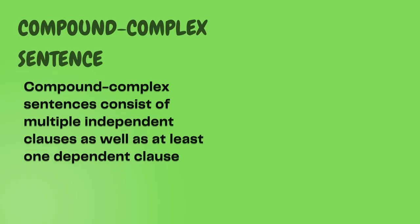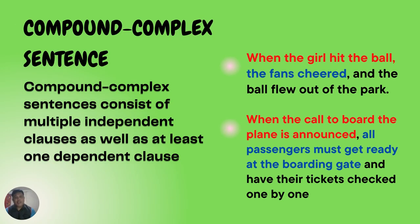Now we move to the last sentence type: the compound-complex sentence. A compound-complex sentence consists of at least two independent clauses and one or more dependent clauses. I've given different colors in the examples to help identify the kinds of clauses — one is an independent clause and the rest are dependent clauses.